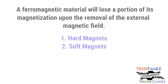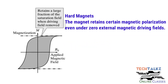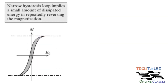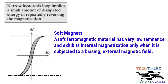From the hysteresis curve, we can differentiate hard and soft magnets. For a hard magnet, when the external magnetic force is zero, it retains a large fraction of flux lines — there is a strong internal magnetic field present due to the retained flux lines. For a soft magnet, it has very low remnance, meaning it retains very few magnetic flux lines, and the loop is very skinny. It retains a very small fraction of the saturation field when the biasing field is zero. Soft magnetic materials are commonly used in transformers.